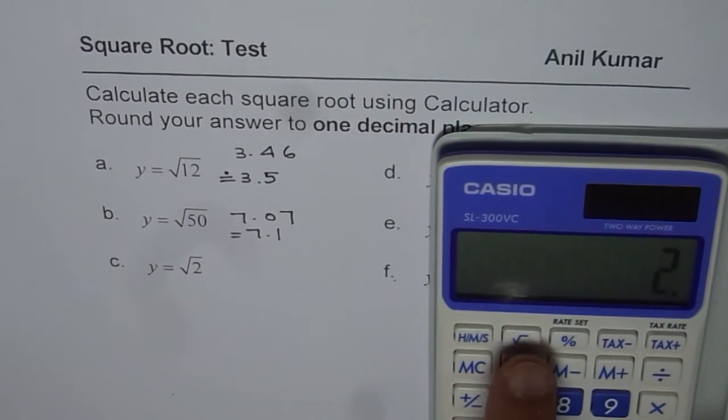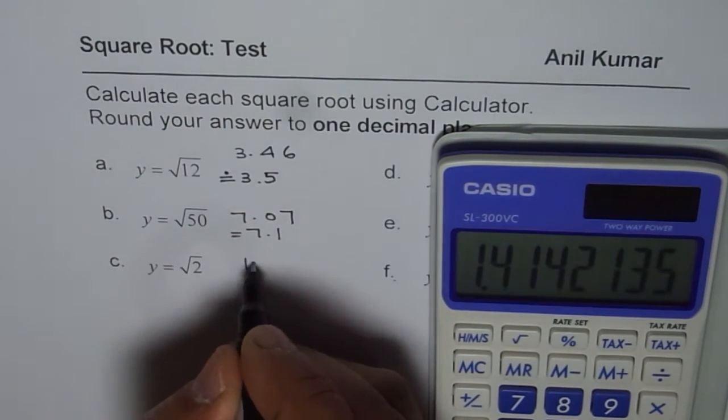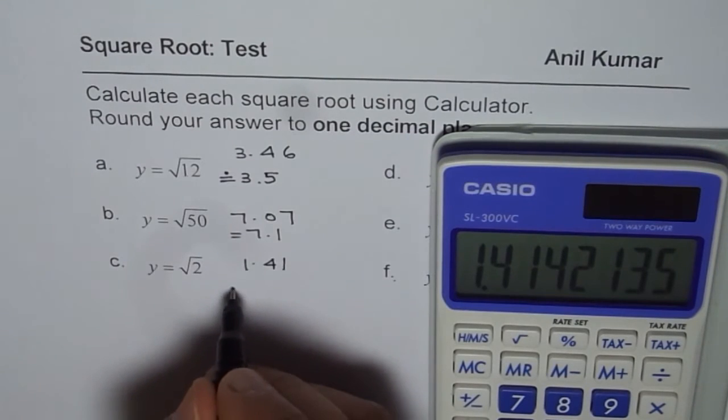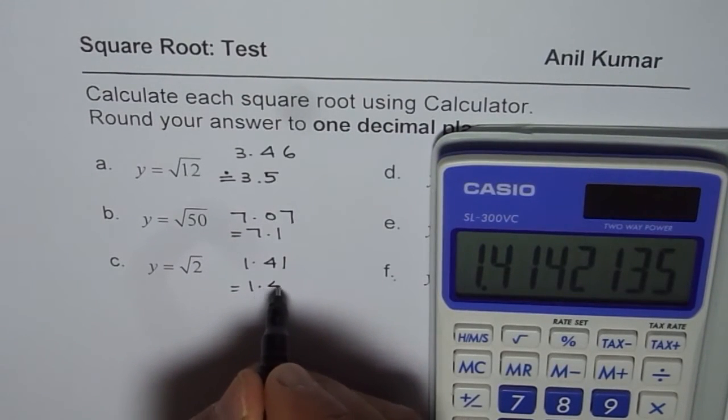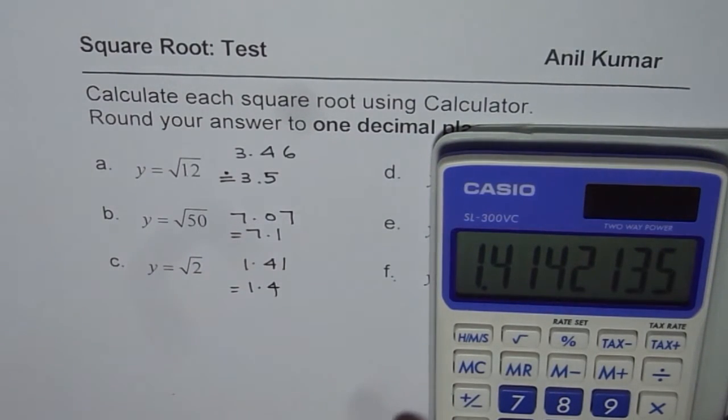Let's do square root of 2, 2 square root. And that is 1.41. So it is 1.41. Rounding it will give us 1.4 since 1 is smaller than 5.